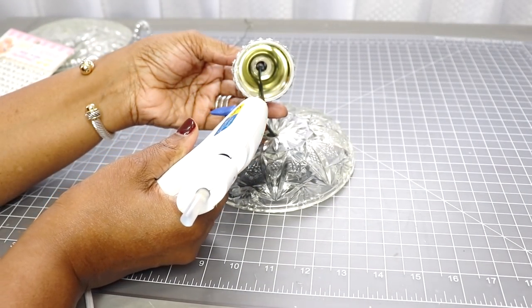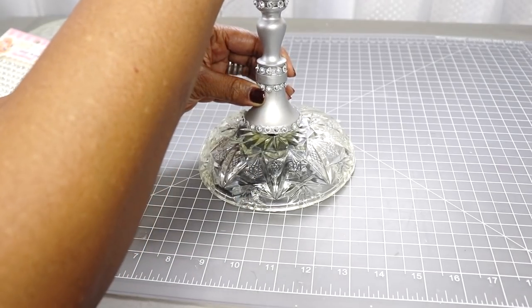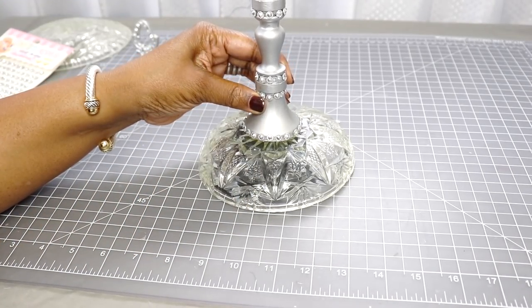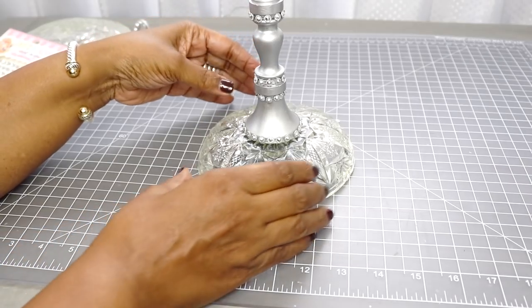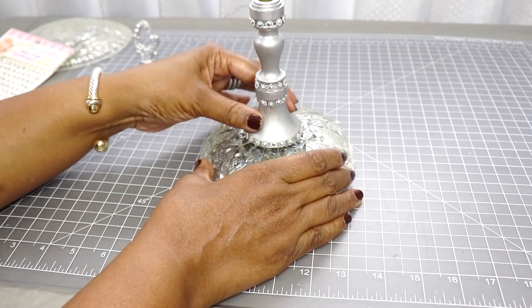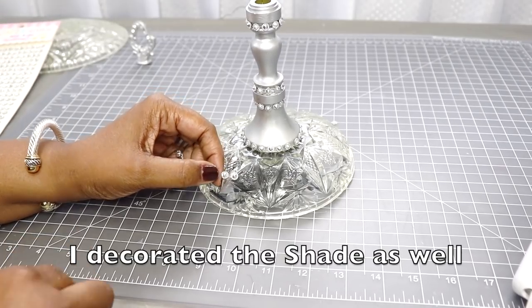So now with a little hot glue I'm going to attach the center portion to the bottom base. After I do that I'm going to use those silver embellishments again. I'm just going to decorate the base of the lamp.